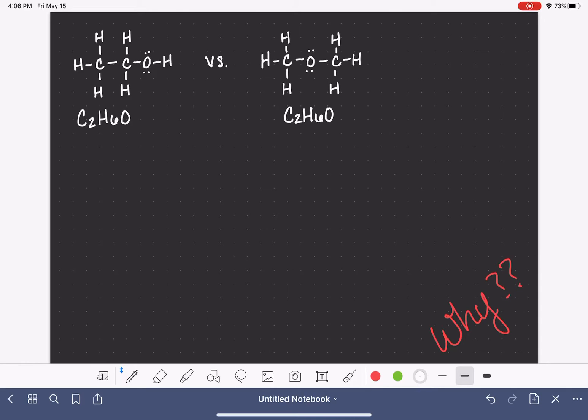So if we were only focusing on their formulas, we might think that these two molecules were actually the same because they have the exact same formula. But you can see from the Lewis structures that I've drawn, they aren't identical in terms of how the atoms are connected in the molecule. There are some differences between the two of them. And because the two molecules have a different structure to them, they also have different properties.